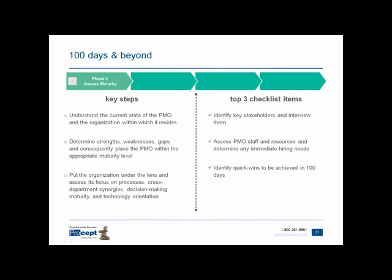Also put the organization under the lens: how is the cross-collaboration, the synergies between departments, the technology orientation, and so forth. The one thing you absolutely must do is first identify who your key stakeholders are and speak with them on a one-on-one basis. There are three types of key PMO stakeholders: the first is people the PMO reports to — your executive leadership. The second is who the PMO works with — your departmental peers. The third is who works or reports into the PMO — your project managers, coordinators, analysts, program managers, and so on.